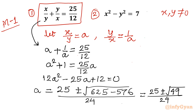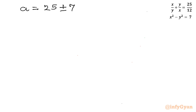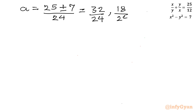Recall our substitution was x over y equal to a. Now, a equals 25 plus or minus 7 over 24. Taking the plus sign: 32 over 24, which simplifies to 4 over 3. Taking the minus sign: 18 over 24, which simplifies to 3 over 4. So our two values are a equal to 4 over 3 or 3 over 4.